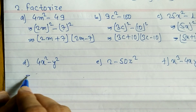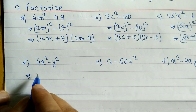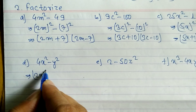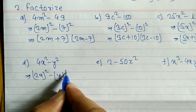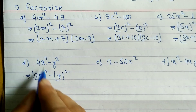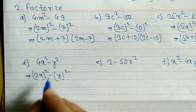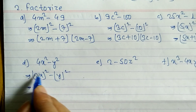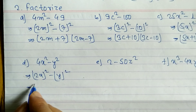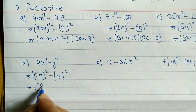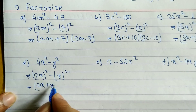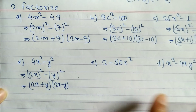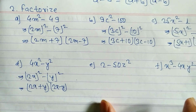For problem d: 4x² - y². We convert this to (2x)² - (y)² since 2² = 4. This is in the form a² - b², with a = 2x and b = y, so the answer is (2x + y)(2x - y).